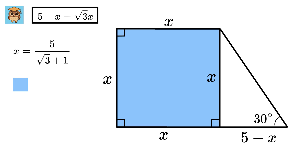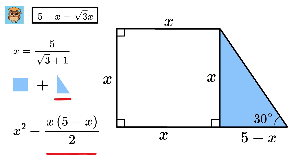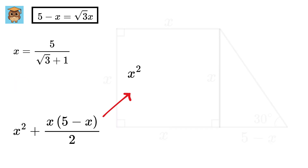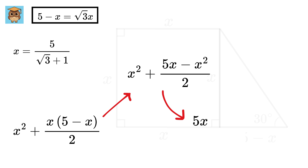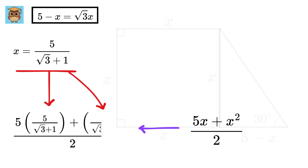Nice. But our job is to find the area of this trapezium. It will be equal to the area of this square plus the area of this triangle. Now, the area of this square is x squared, and the area of this triangle is x times (5 minus x) by 2. So the area will be x squared plus 5x minus x squared by 2, which is the same as 5x plus x squared by 2. Now we can simply substitute the value of x and get the answer.